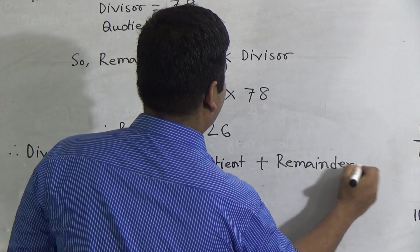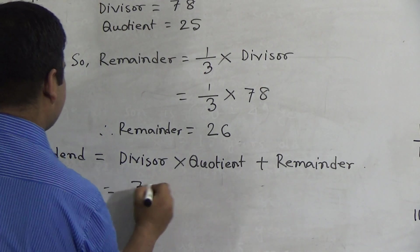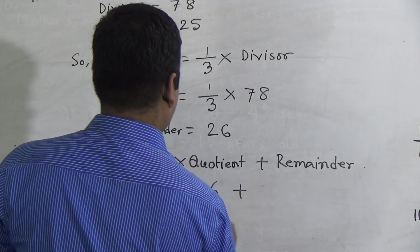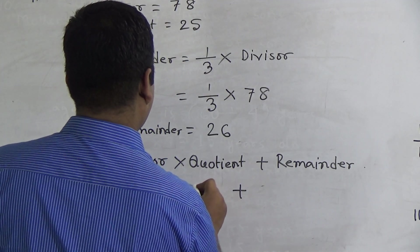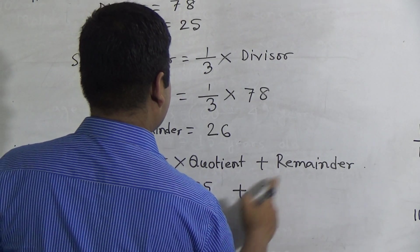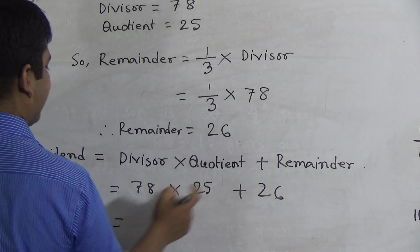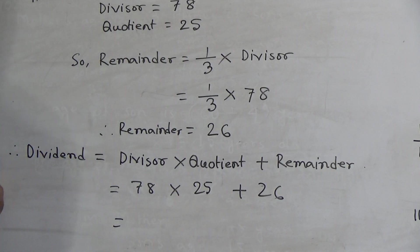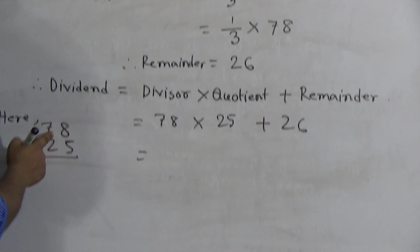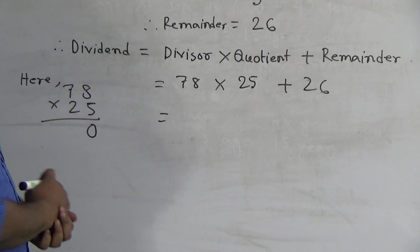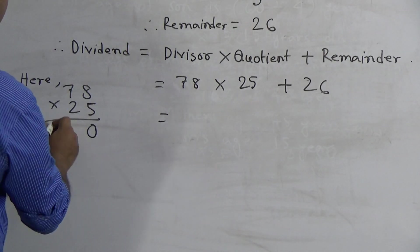So divisor is 78 multiply quotient is 25 plus reminder is 26. Now we do multiplication of 78 and 25. And in this section you write here, 78 multiplied by 25. So first we multiply 78 by 5: 5, 8, 40, carrying 4. 7, 5, 35 plus 4, 39.